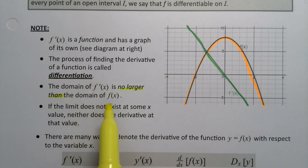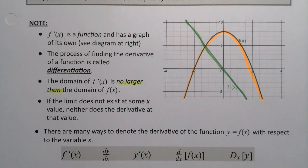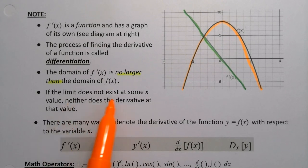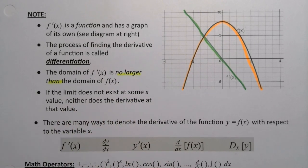That can happen for example at sharp corners or cusps, if you remember that from Calc 1. Now if the limit does not exist at some x value, neither does the derivative. So if your function has no value or if the limit does not exist, then the derivative does not either.